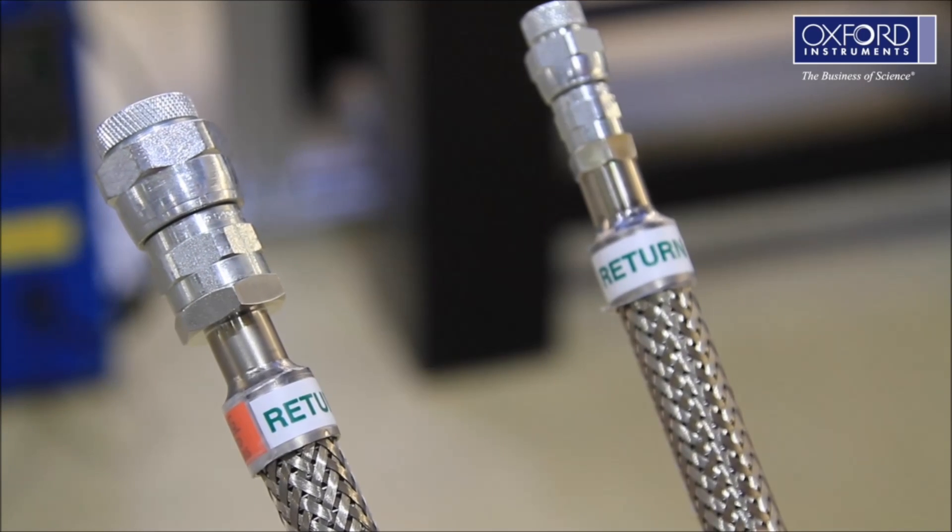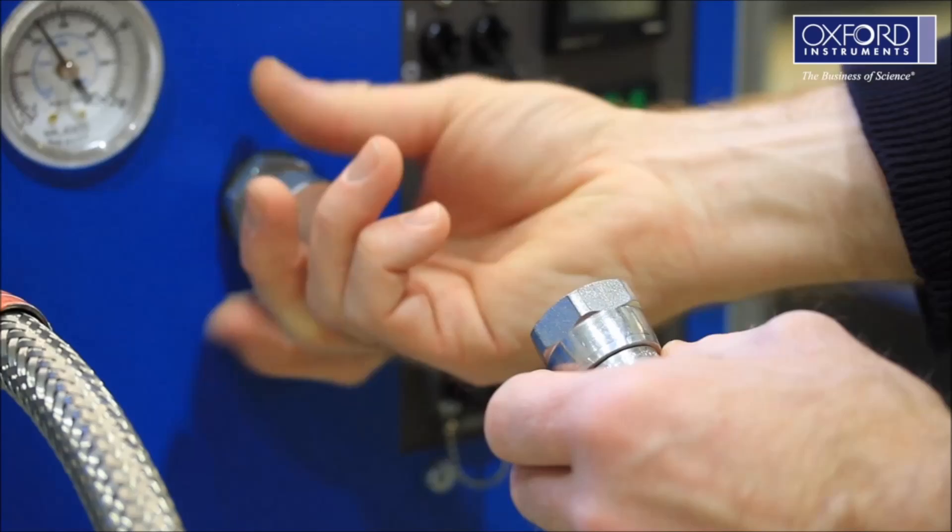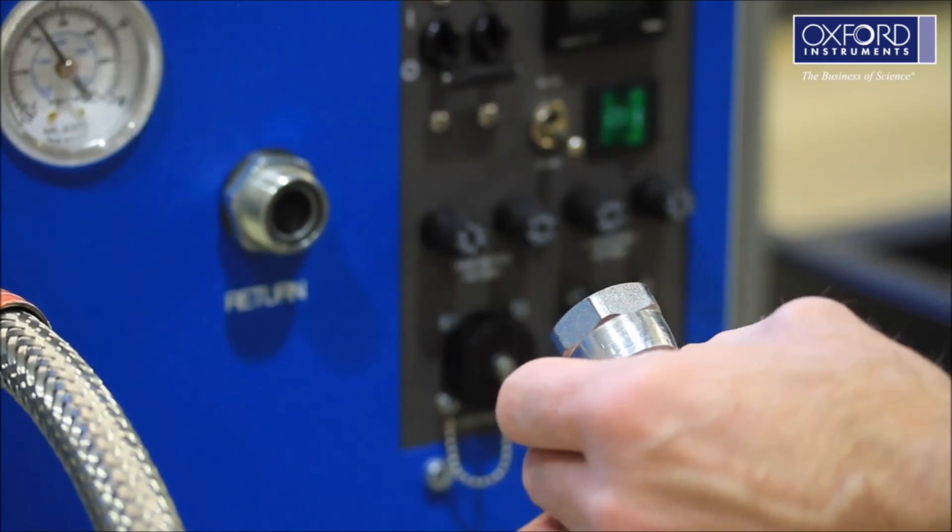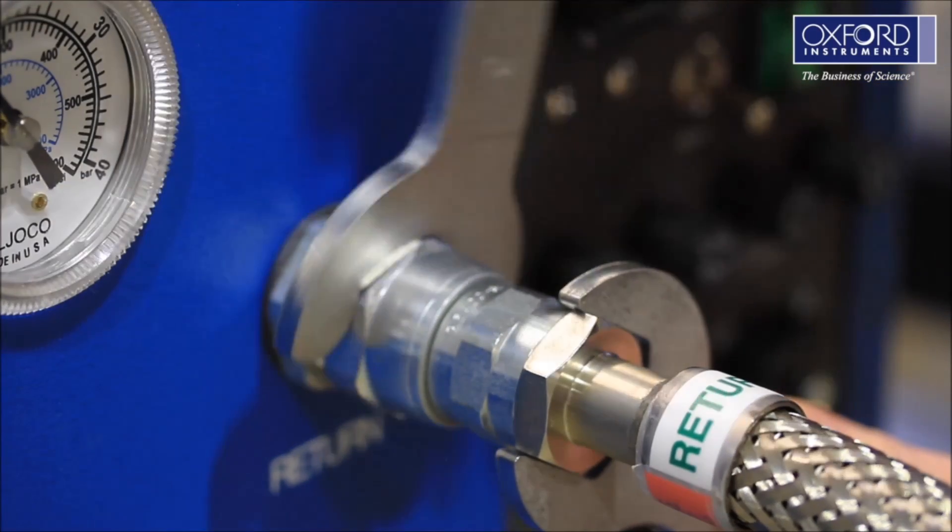Remove the caps and fit the lines to the compressor. Ensure you use two spanners to tighten the fittings.